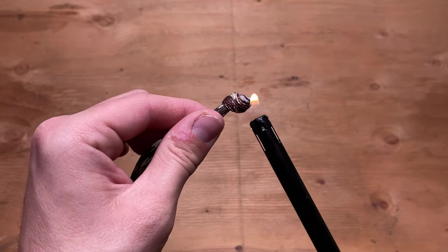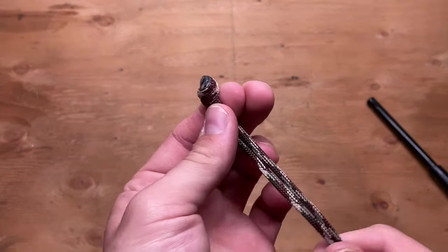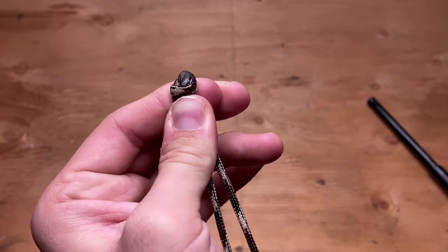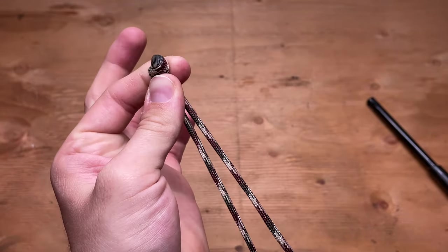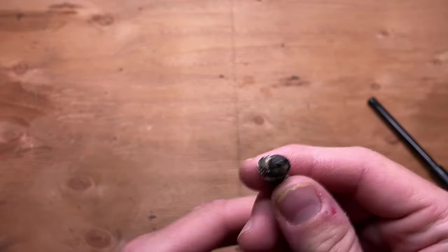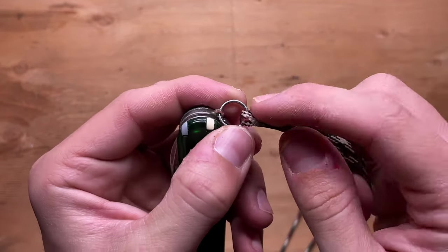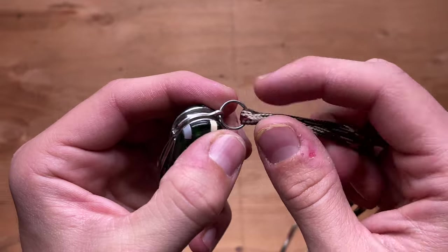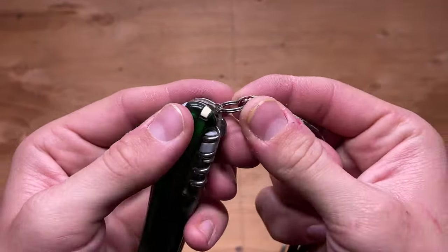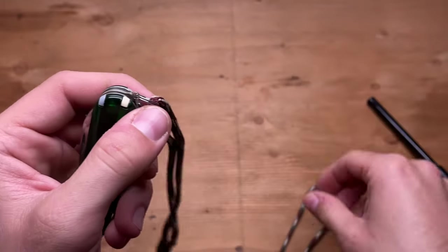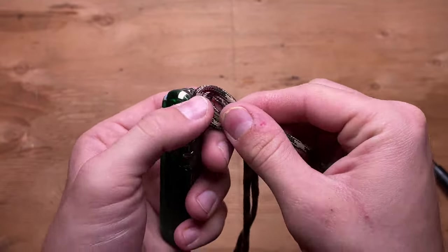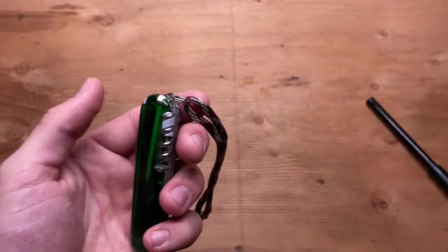And there you go, super strong knot, very easy to make. And now all you got to do is you got to grab the little key chain thing here, little key loop that comes with every Swiss Army knife, you put that on it, and that's pretty much it. That's exactly what I have right here.